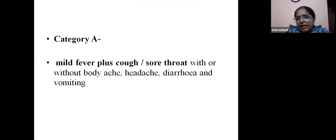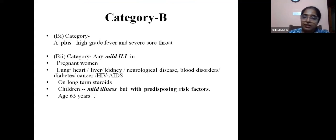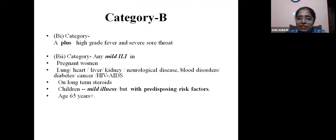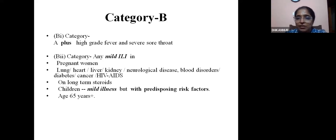Category A is mild fever plus cough or sore throat, with or without body ache, headache, diarrhea, and vomiting. Category B1 is higher-grade fever with severe sore throat. Category B2 is mild fever with underlying comorbidities — pregnant women, patients on long-term steroids, children with predisposing risk factors, immunodeficiency disorders, or age more than 65 years. Comorbidities are universally seen in all fever cases where mortality occurs.